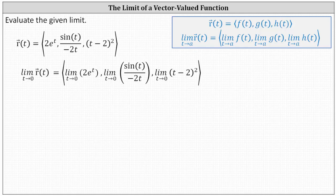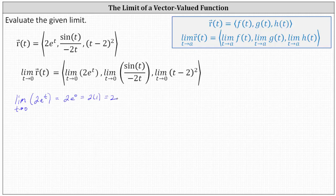Let's begin with the x component, where we have the limit as t approaches zero of two e to the power of t. We can determine this limit by performing direct substitution, which gives us two e to the power of zero. Since e to the zero is one, the limit is equal to two — the x component of the vector.